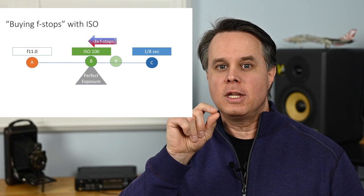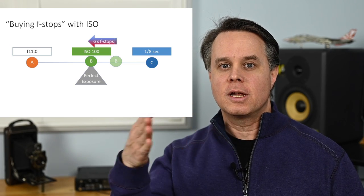On the opposite end, if you want the smooth glass effect on water — like a stream or waterfall — you need a slow shutter speed, which means getting to a lower ISO. Other techniques include a neutral density filter, which reduces light without affecting color, but requires buying filter systems. The net advantage of 'buying f-stops' with ISO is making creative choices without having to buy more gear.